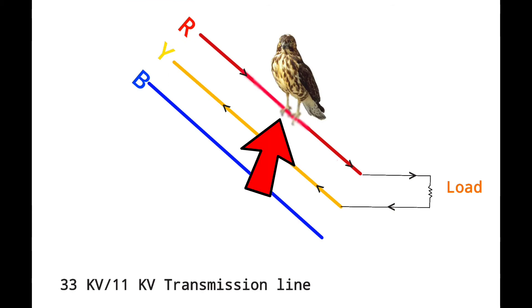Here a bird sits on one of a three-phase transmission line which may be 33 kV or 11 kV. In this particular transmission line between two phases, I have shown a load connected with R phase and Y phase, and current flowing through the load and the load is running.